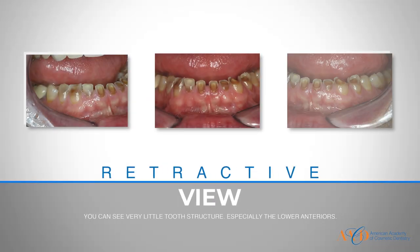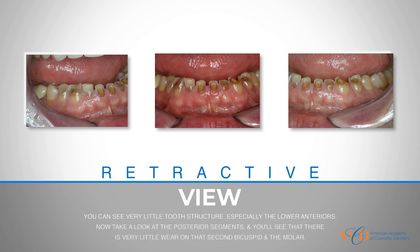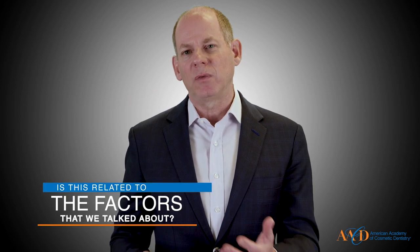In the retracted view you can see there's very little tooth structure, especially on the lower anteriors. Looking at the posterior segments, there's very little wear on the second bicuspid and the molars, but there's significant wear on the lower anteriors. Is this related to psychogenic stress, a bite issue, a constricted envelope of function from the lingual shape of those maxillary anterior crowns, or some airway or obstruction issue? That's what's going through my head — wear on the anteriors but not on the posteriors.